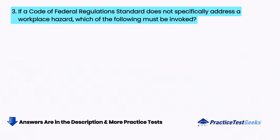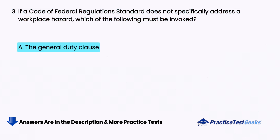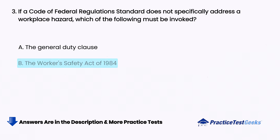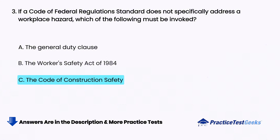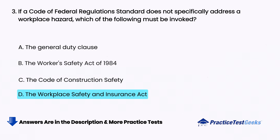If a Code of Federal Regulation standard does not specifically address a workplace hazard, which of the following must be invoked? A. The General Duty Clause, B. The Workers' Safety Act of 1984, C. The Code of Construction Safety, D. The Workplace Safety and Insurance Act.